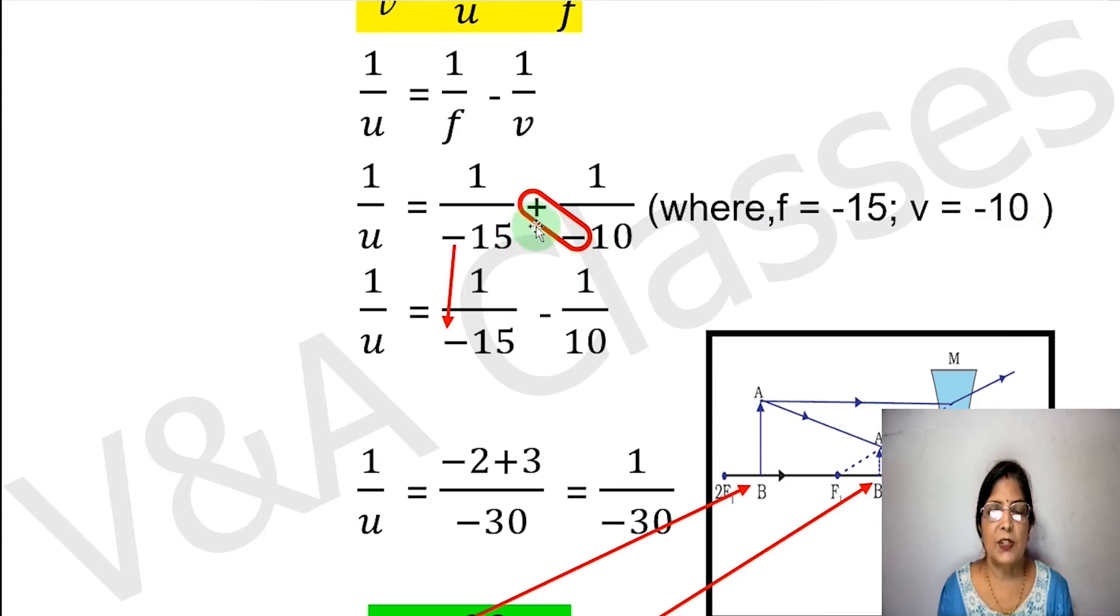We will see that plus and minus are two signs, so these two signs are merged into a minus sign and this sign will carry on. So our next step is 1/u equals to 1/minus 15 minus 1/10.